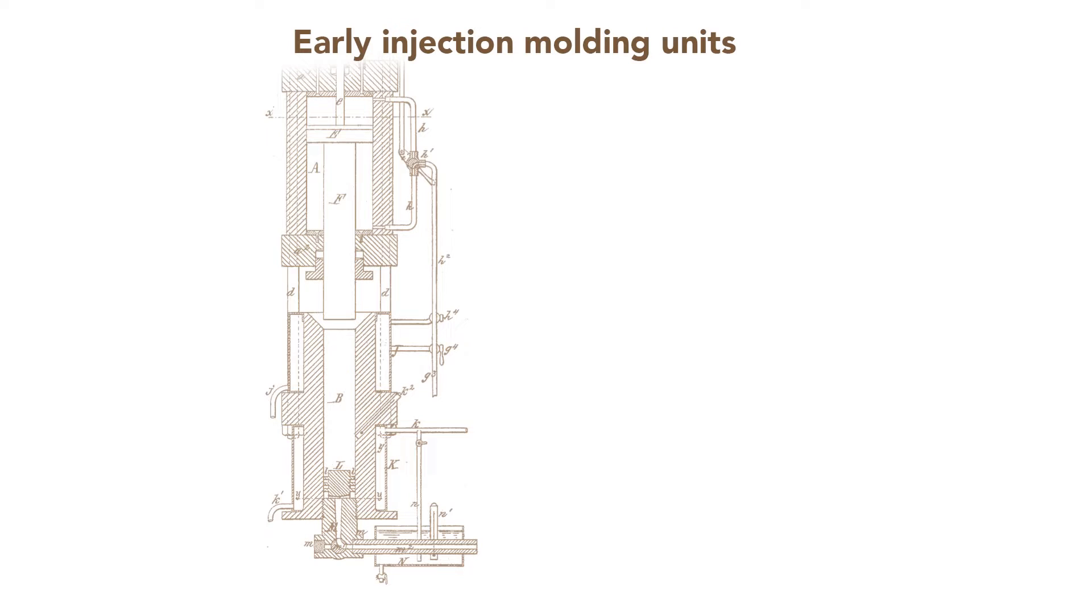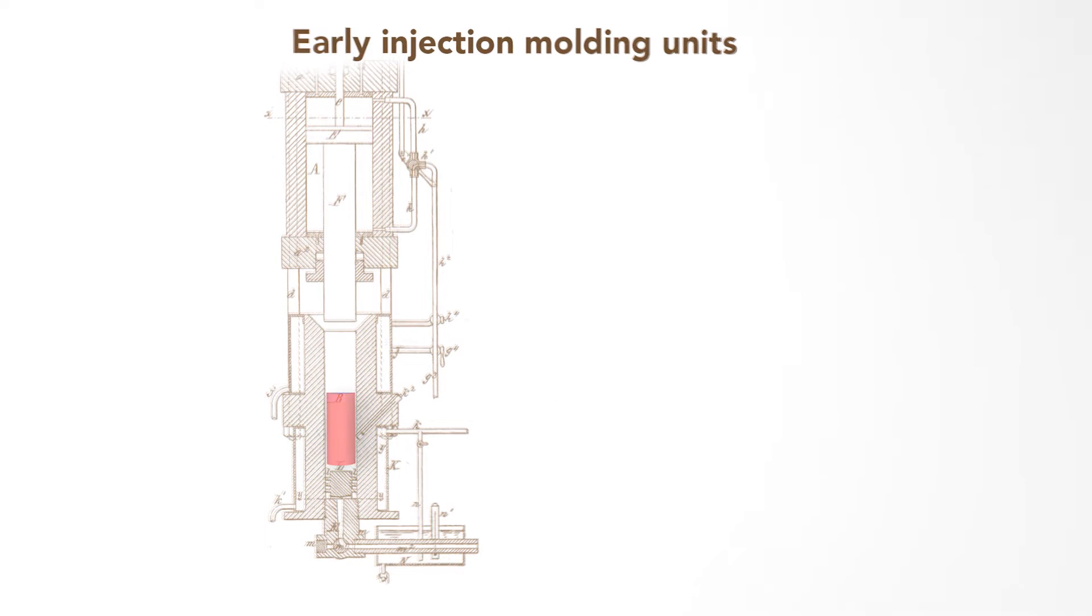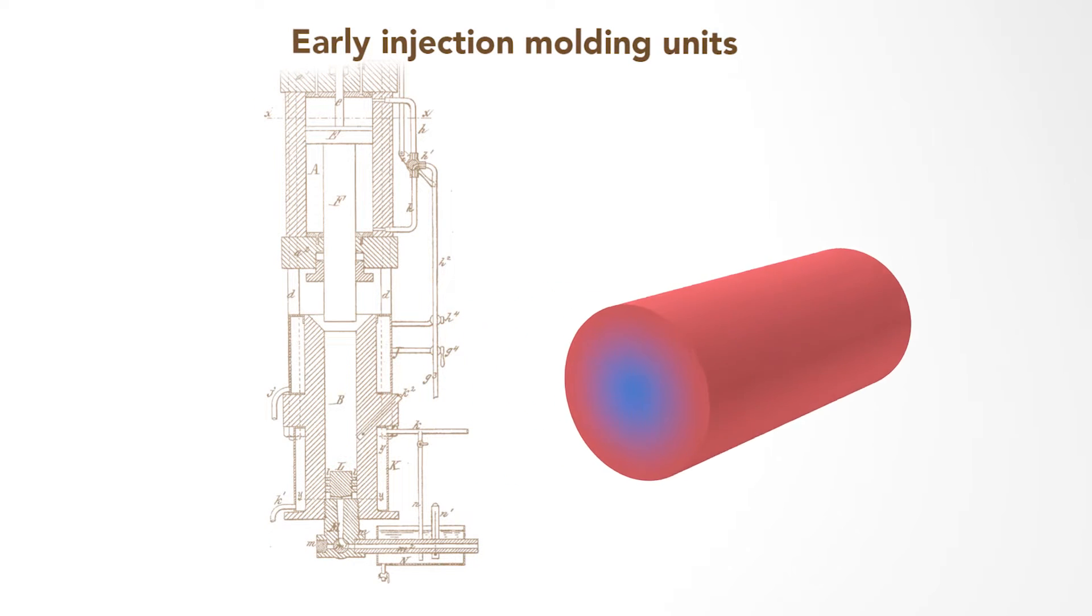Before the mid-20th century, injection molding machines used only external heating of the barrel to melt the plastic before a plunger injected the molten material. But because plastic conducts heat poorly, the temperature was uneven in the barrel. Either the middle was too cool and not fully melted, or the outer regions were too hot and degraded the plastic.